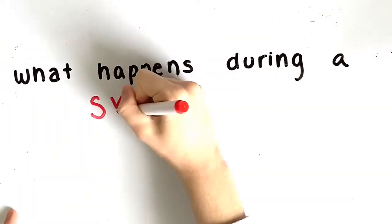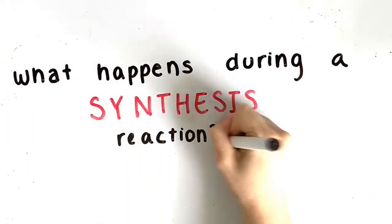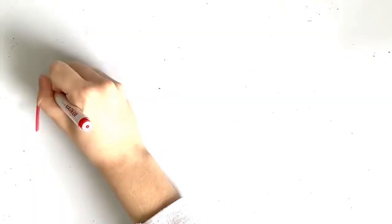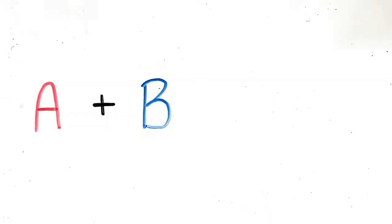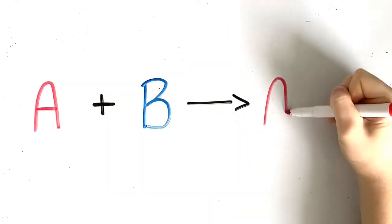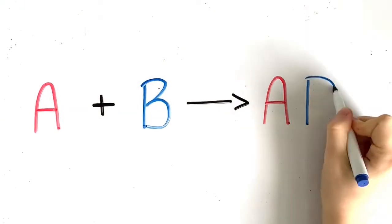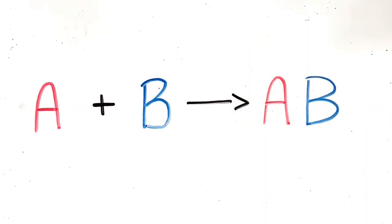What happens during a synthesis reaction? We use the formula A plus B yields AB to represent a synthesis reaction. There are three main types of synthesis reactions.